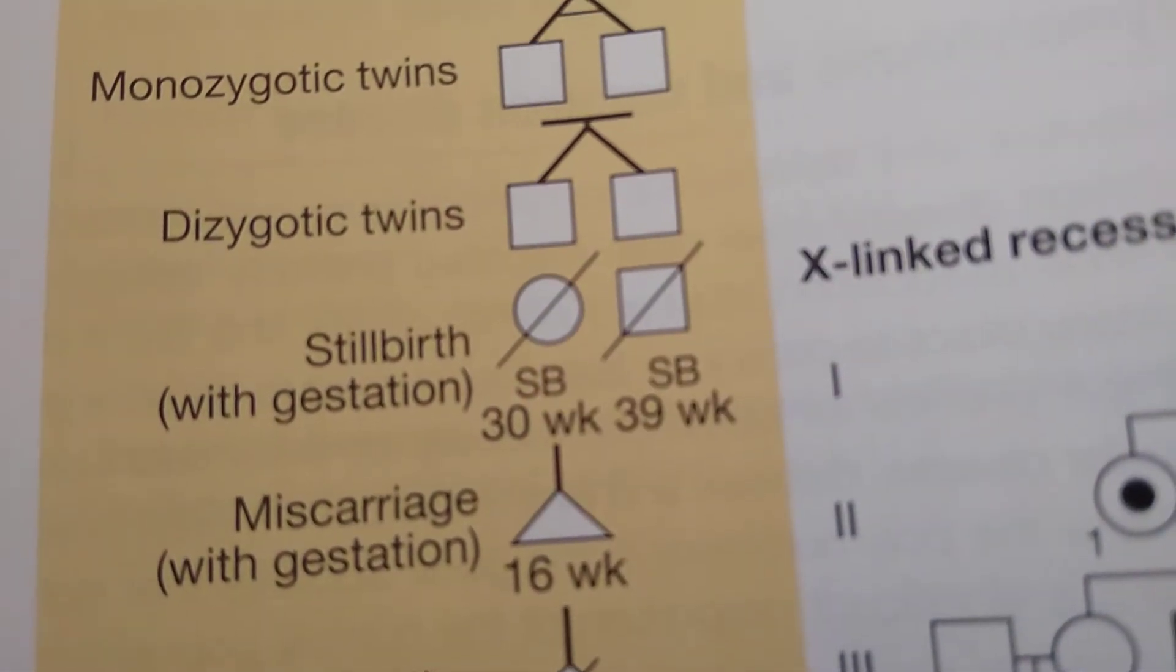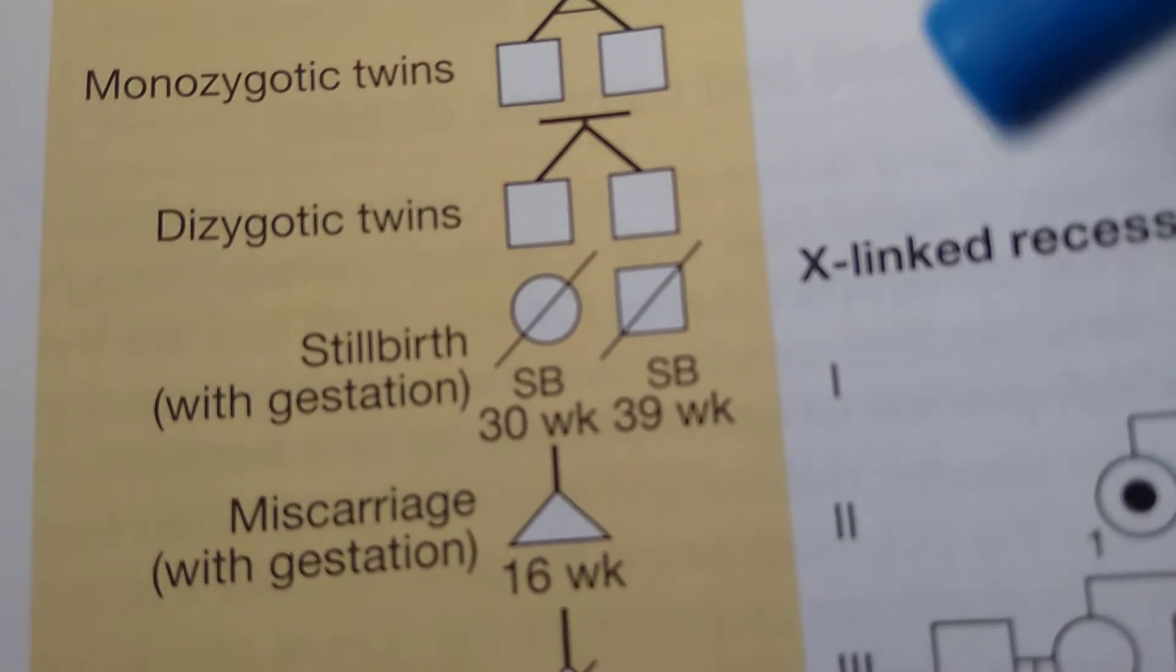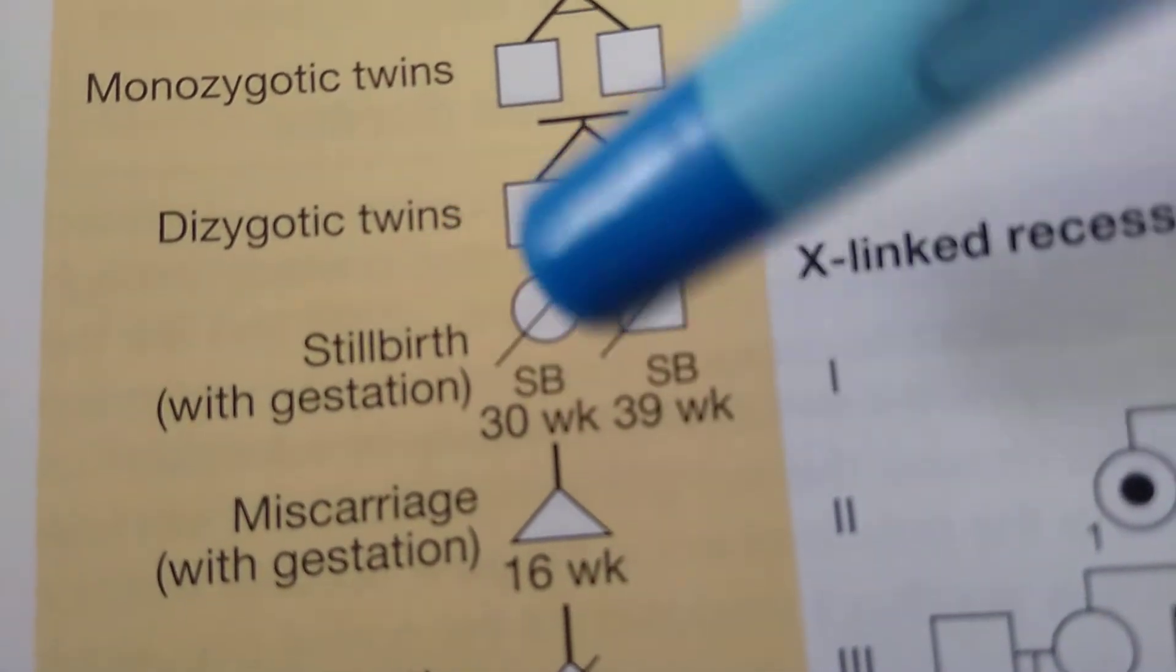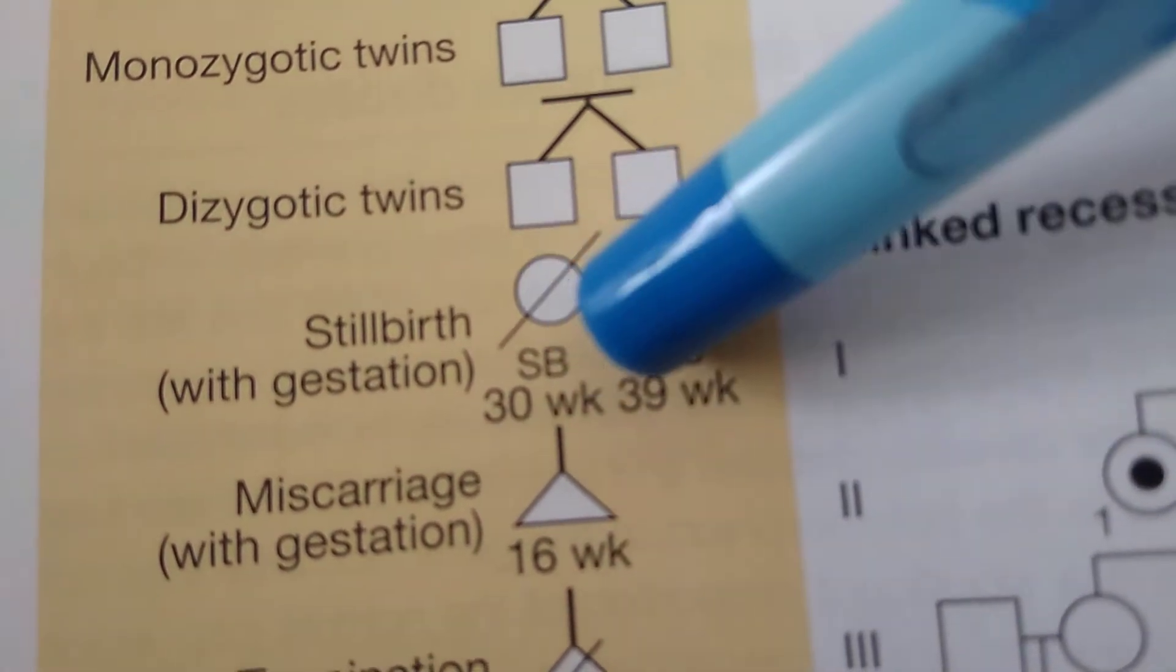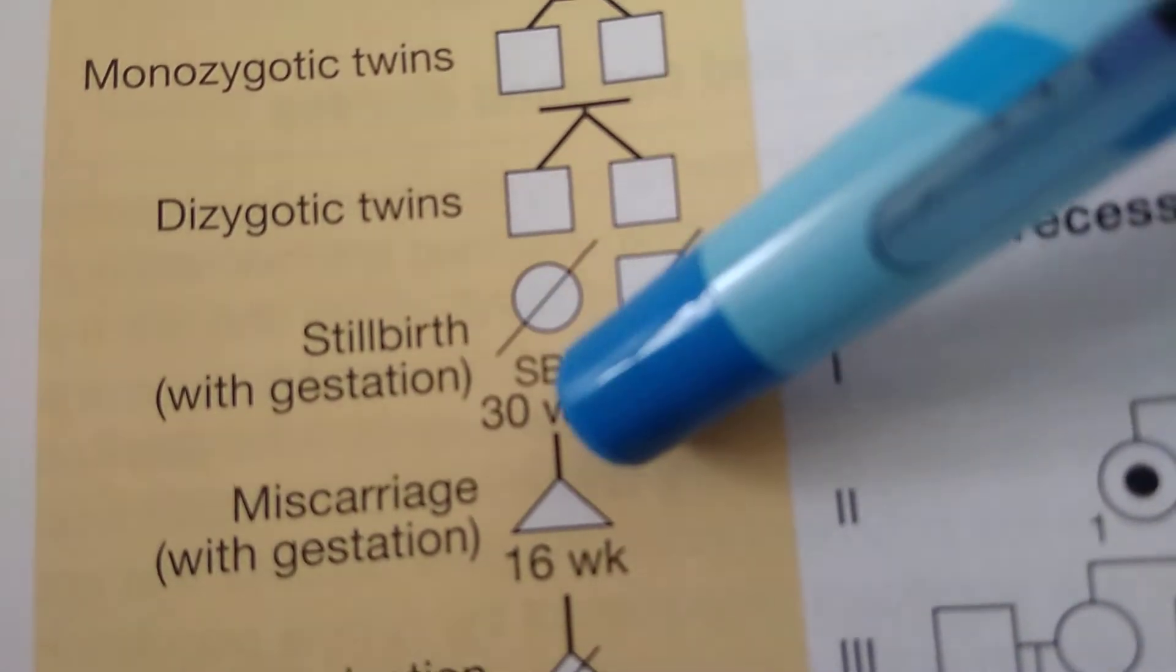Stillbirth is very easy - you just kill the baby with a line like this and below you will write stillbirth at what week. This person was not born alive, okay, but still the representation is the same. You're gonna put a line.